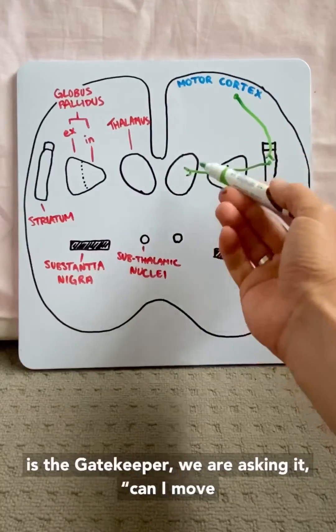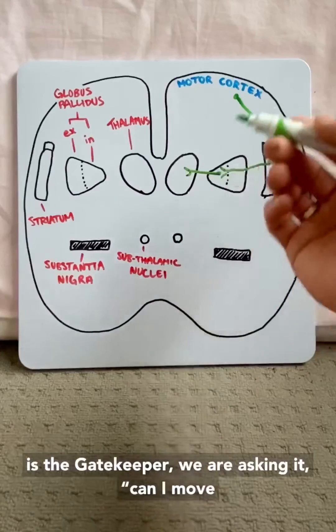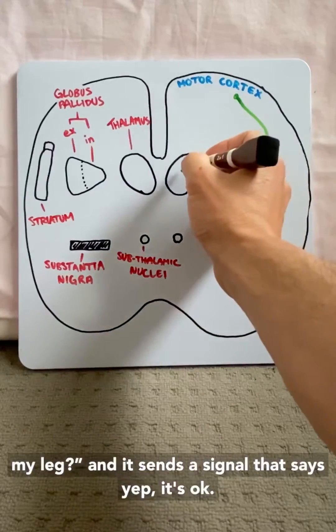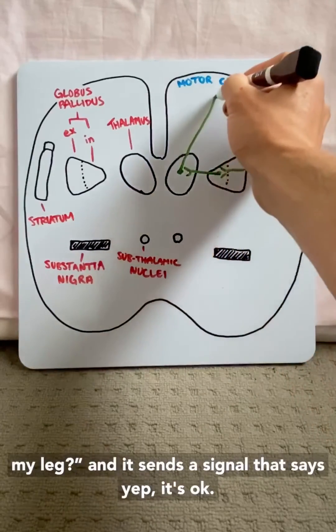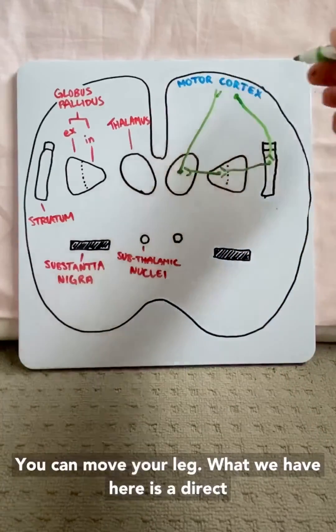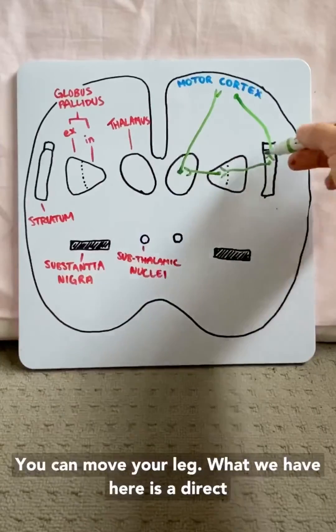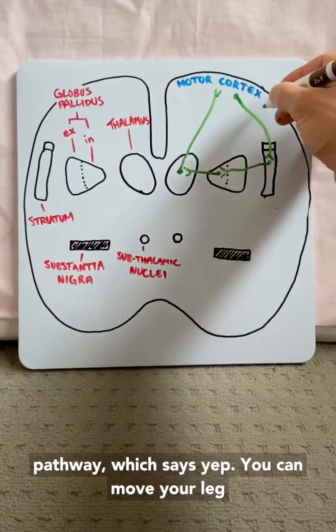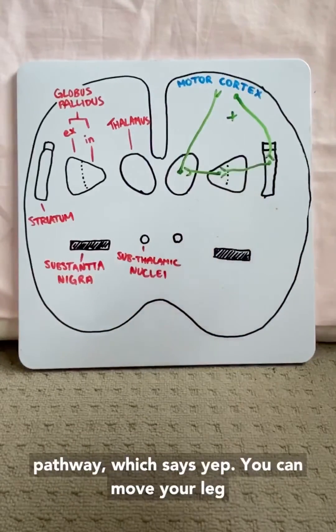Now the thalamus is the gatekeeper. We're asking it: can I move my leg? And it sends a signal that says, yep, it's okay, you can move your leg. What we've got here is a direct pathway which says, yep, you can move your leg.